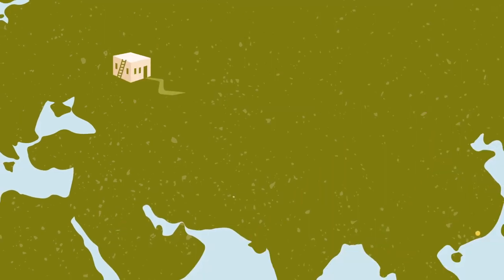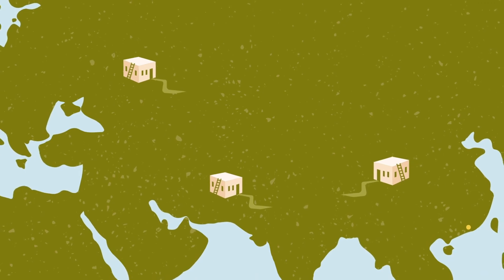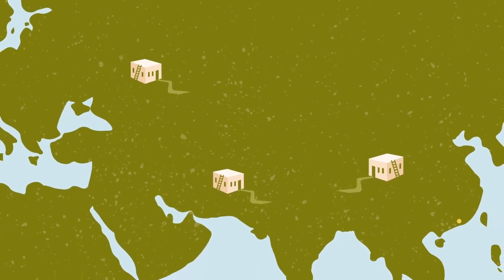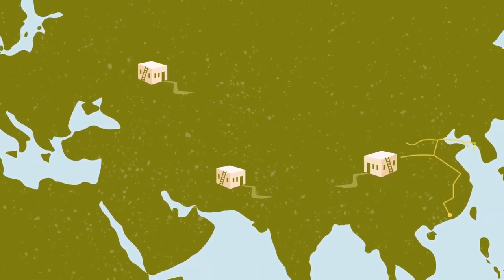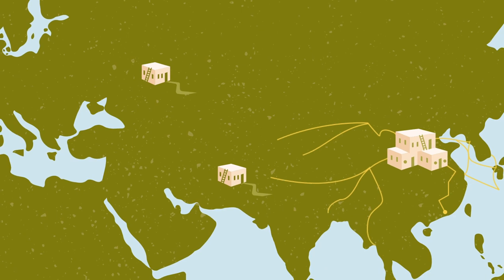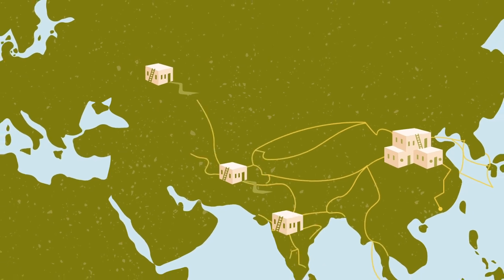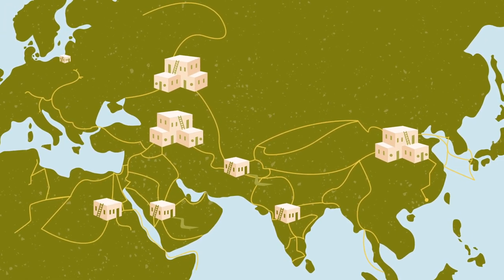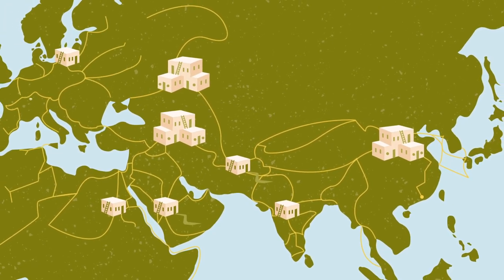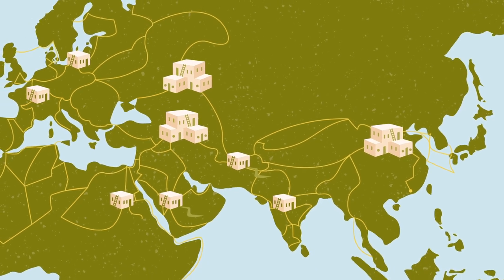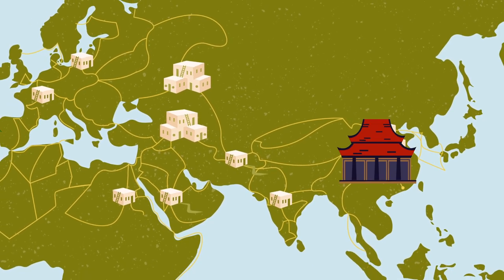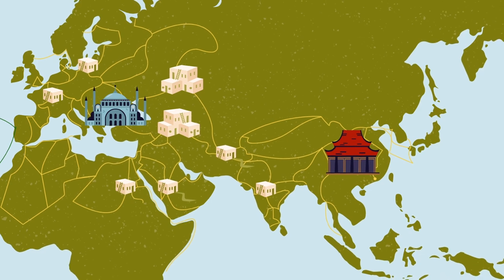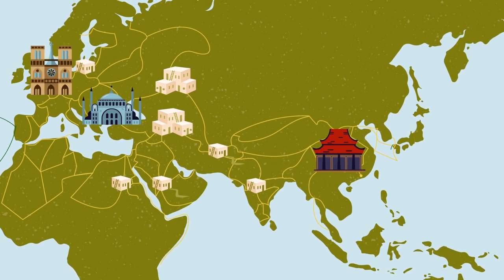In the period before 1450, human communities were distinct and diverse. But they became increasingly linked by expanding and thickening networks of exchange. Those networks grew and collapsed and recovered. But in each case, they transformed the societies they linked. Gradually, the global tapestry was taking shape.